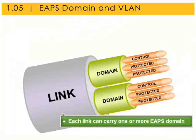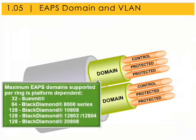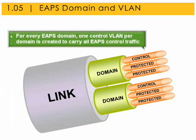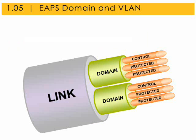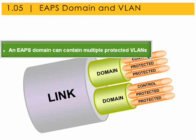One control VLAN is created per EAPS domain, whereas multiple protected VLANs can be contained in an EAPS domain. Each link can carry one or more EAPS domains. The maximum number of EAPS domains supported per ring is platform dependent, ranging from 32 to 128. One control VLAN per domain carries all EAPS control traffic, and an EAPS domain can contain hundreds of protected VLANs.